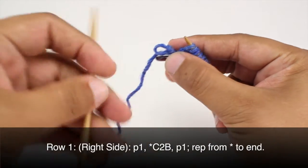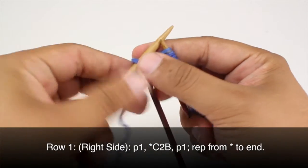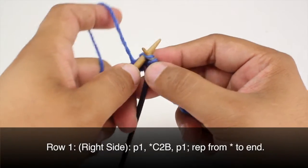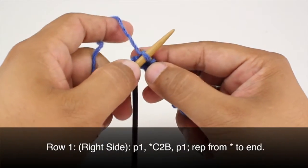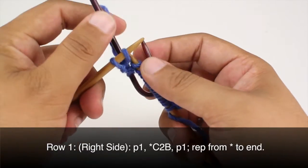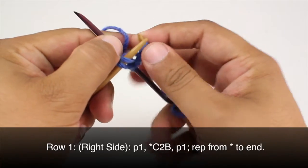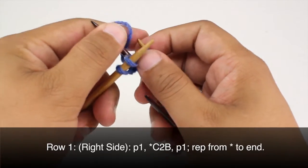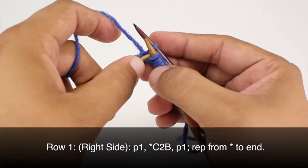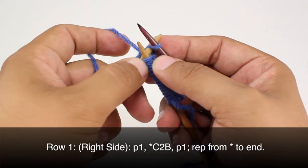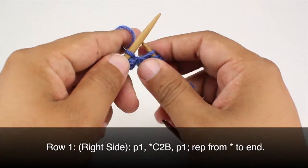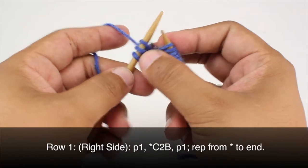Now we are going to knit the next stitch and then we'll knit the stitch from our cable needle. I'm just gonna move that stitch to the tip here and we will knit the stitch right there. Okay so that's a cable 2 back.